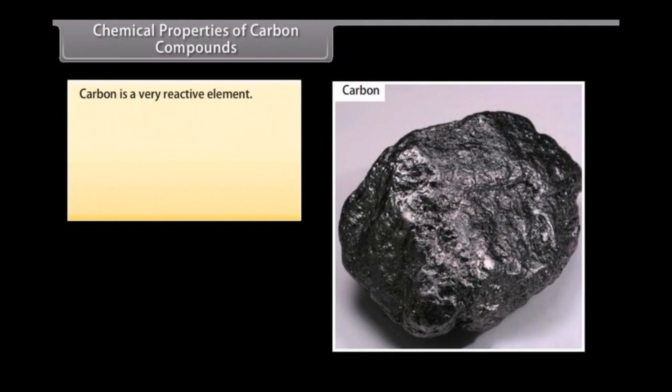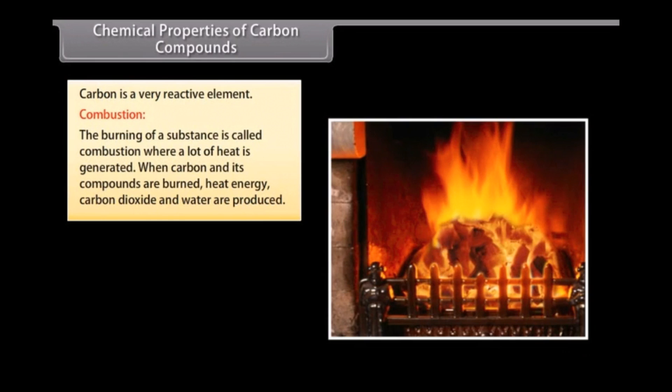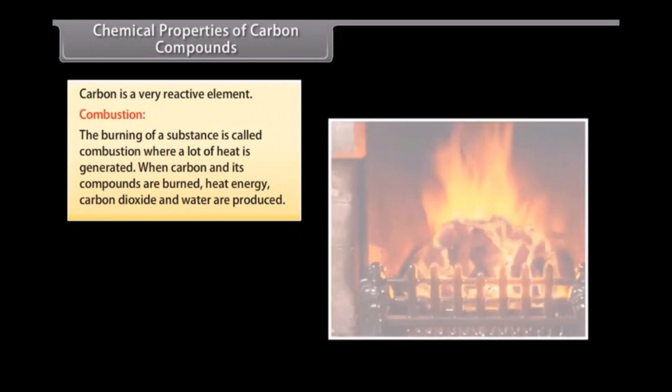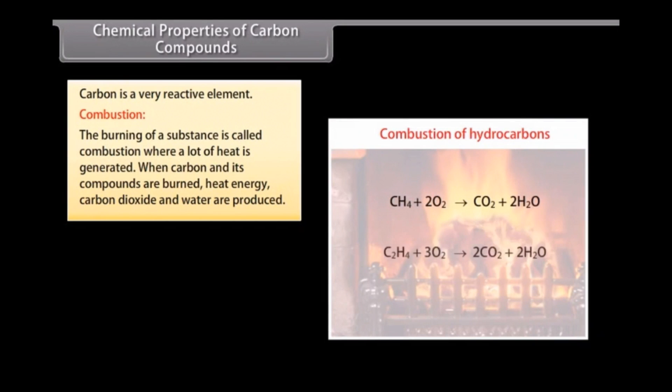Chemical properties of carbon compounds. Carbon is a very reactive element. Main chemical properties are listed. Combustion. The burning of a substance is called combustion. It is a process that generates a lot of heat. When carbon and its compounds are burnt, heat energy, carbon dioxide, and water are produced.